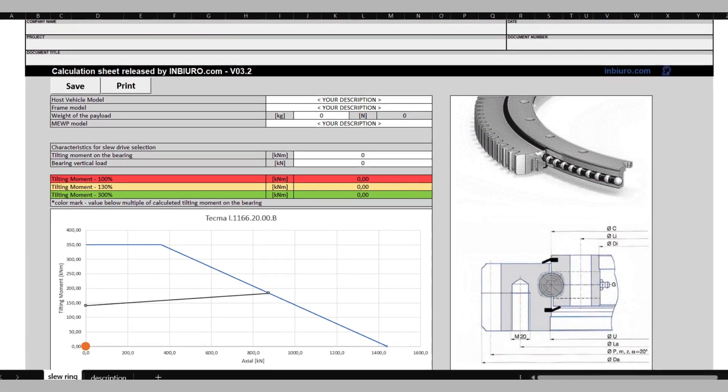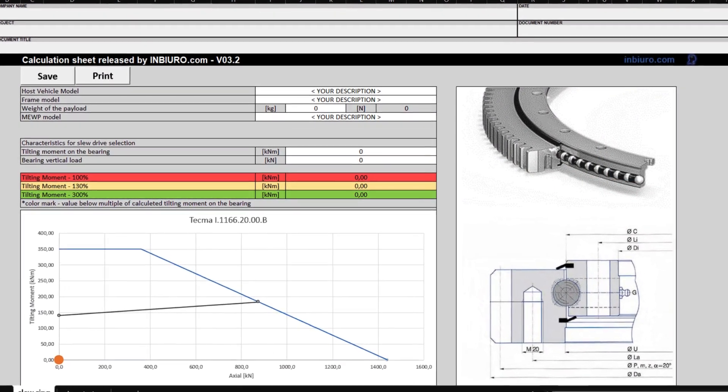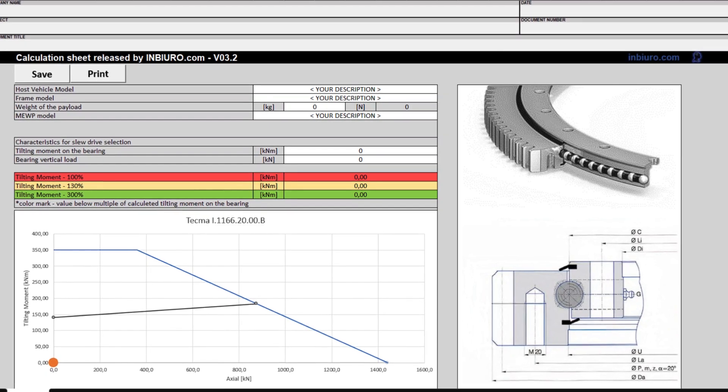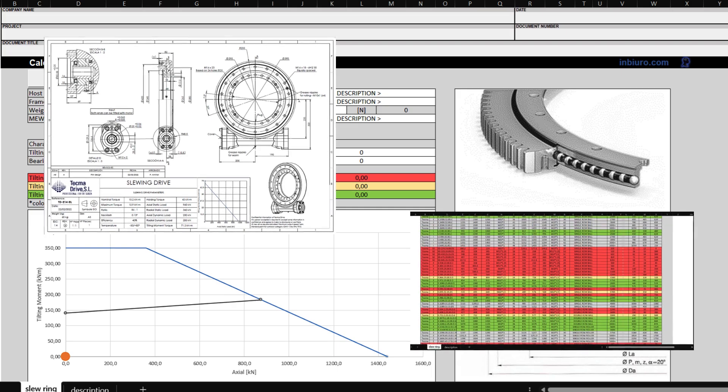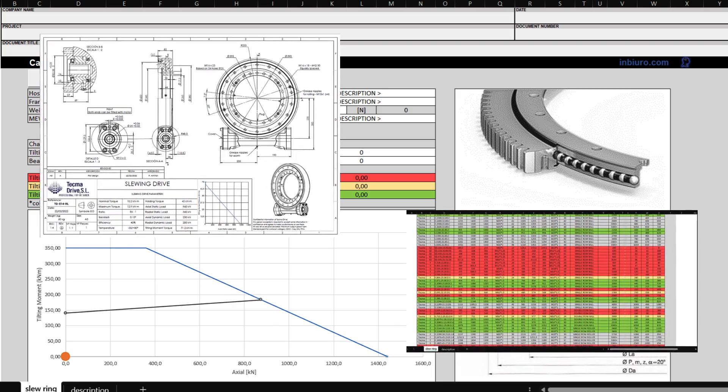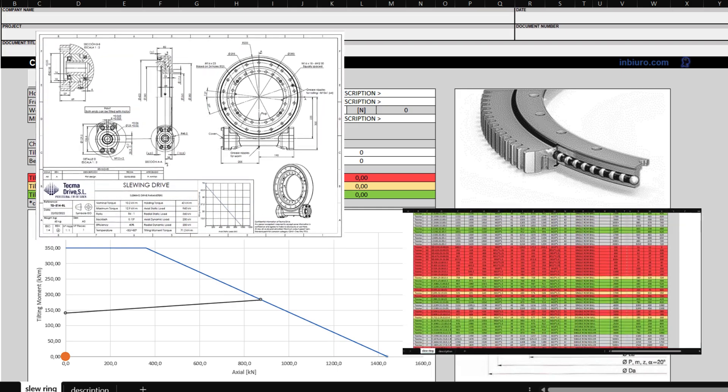Once we have this data, we can proceed to the bearing or drive initial selection. You can go to data sheets, or you can use our Excel selection tool, which will help you choose the right size and save records for your project technical file.